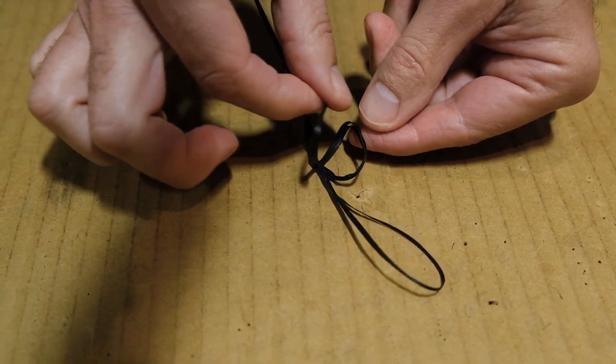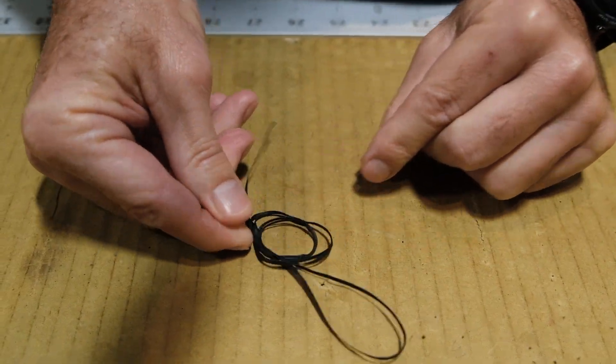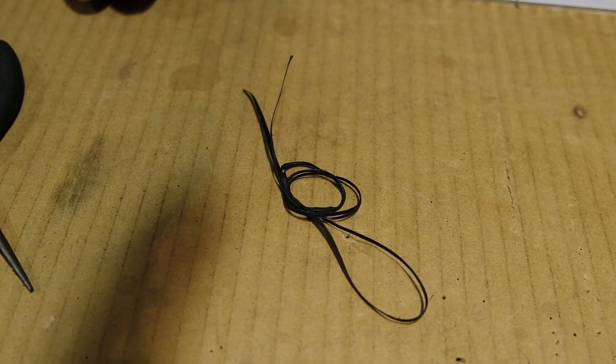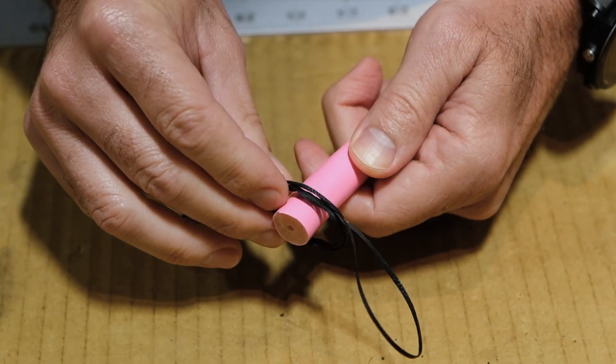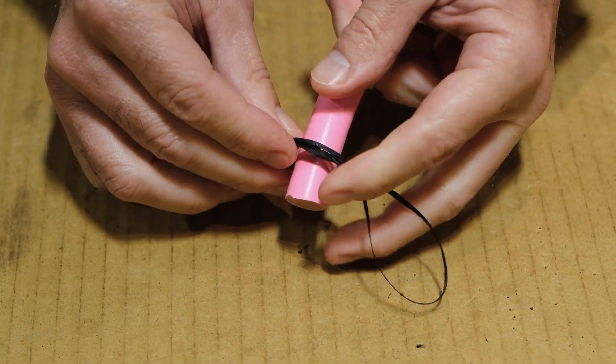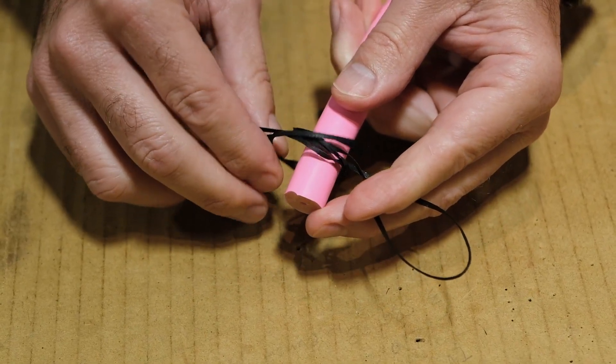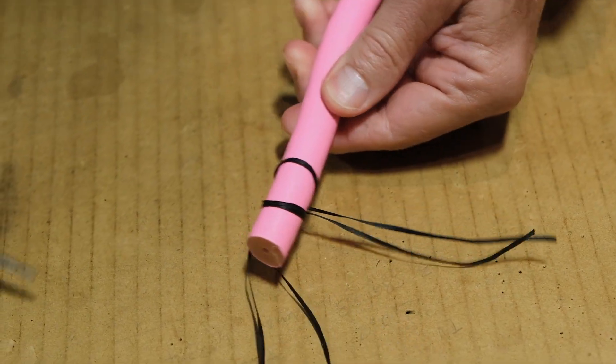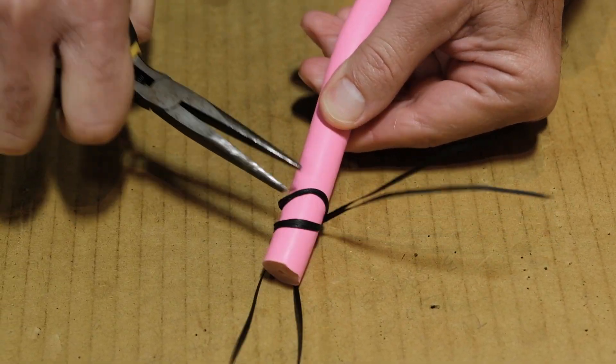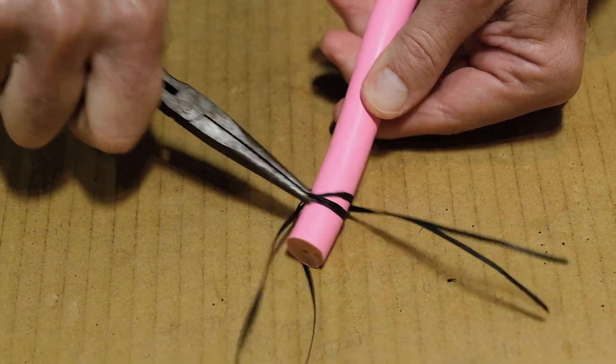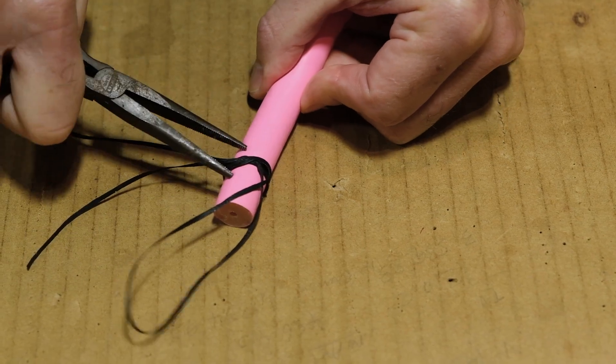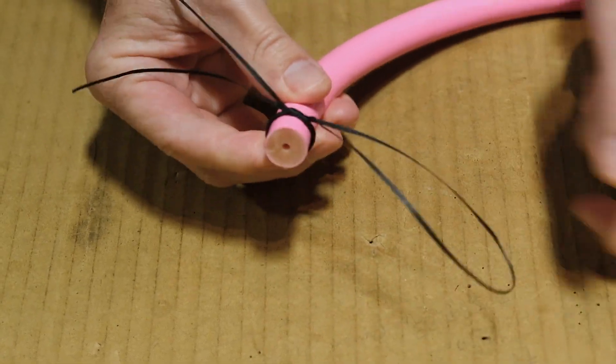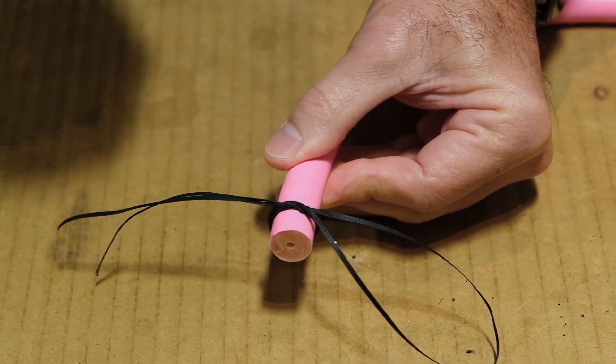So from here, what I do is fold it back on itself. So that's creating one, two loops that are going to be secured onto the speargun rubber. Once the loops are on the rubber, you kind of pull it tight and get it more secure. As you can see, it's spread out. And I just take my little needle nose pliers, get this all together.